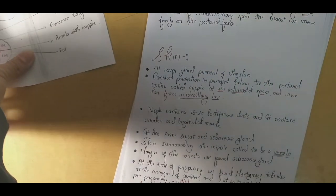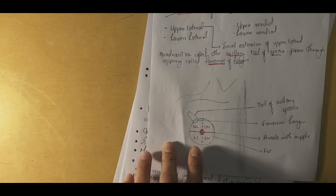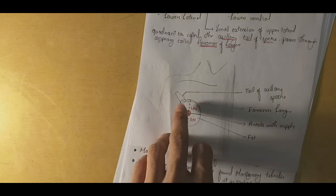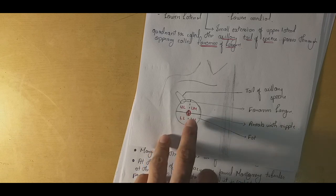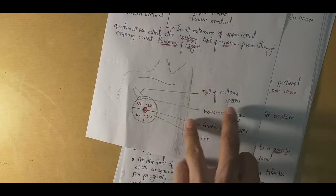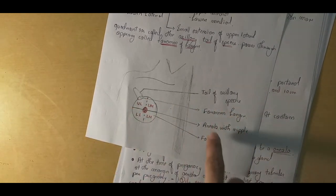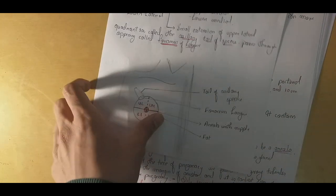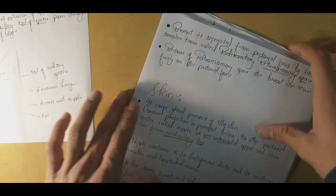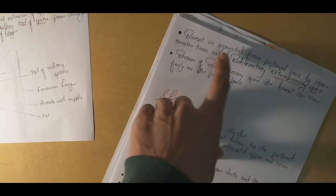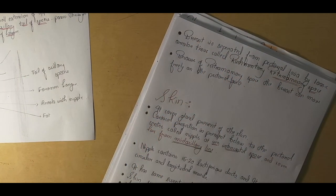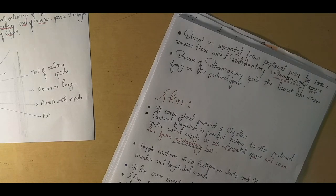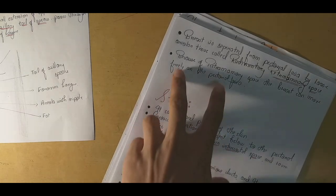In my diagram the position is divided on the basis of upper lateral, lateral, and medial positions: upper lateral quadrant, upper medial quadrant, lower lateral quadrant, and lower medial quadrant. You can also see the tail of the axillary process, the foramen of Langer, and the areola and nipple area. The retrommammary space is separated from the pectoral fascia by loose areolar tissue, which provides flexibility to the breast so it can move freely on the pectoral fascia.